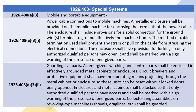1926.408(A)(3) — Mobile and Portable Equipment. 1926.408(A)(3)(i) — Power Cable Connections to Mobile Machines. A metallic enclosure shall be provided on the mobile machine for enclosing the terminals of the power cable. The enclosure shall include provisions for a solid connection for the ground wire's terminal to effectively ground the machine frame. The method of cable termination used shall prevent any strain or pull on the cable from stressing the electrical connections. The enclosure shall have provision for locking so only authorized qualified persons may open it and shall be marked with a sign warning of the presence of energized parts.